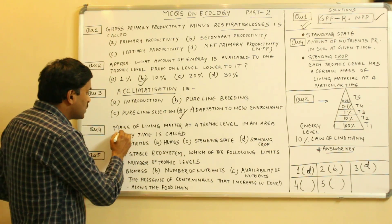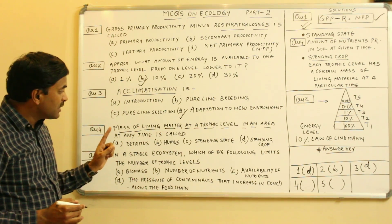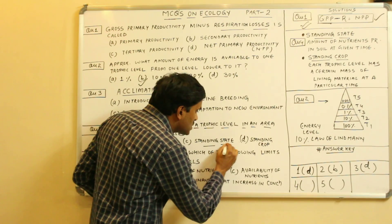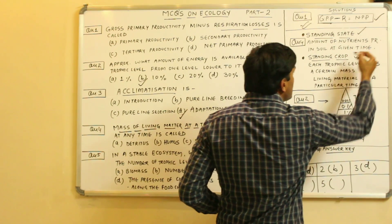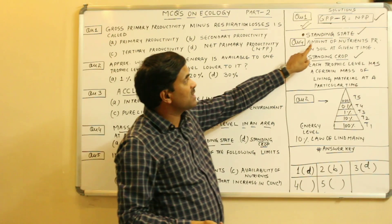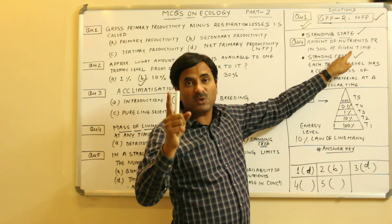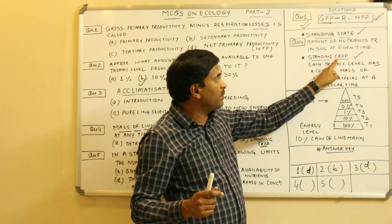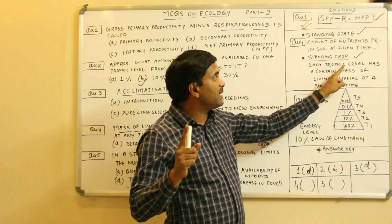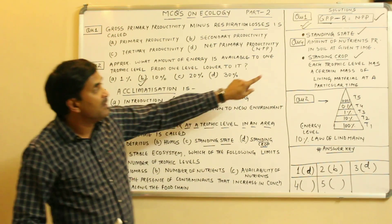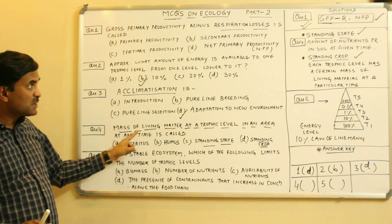Question 4: the mass of living matter at a trophic level in an area at any given time. There are two close options — standing state and standing crop — which students often confuse. Standing state is the amount of nutrients present in the soil at a given time, such as calcium and phosphorus. Standing crop is defined in NCERT as: each trophic level has a certain mass of living material at a particular time.